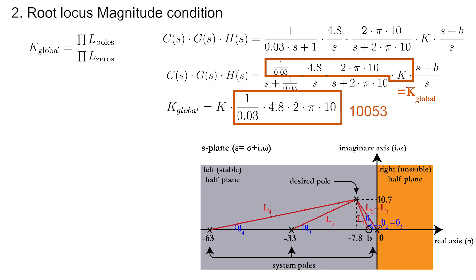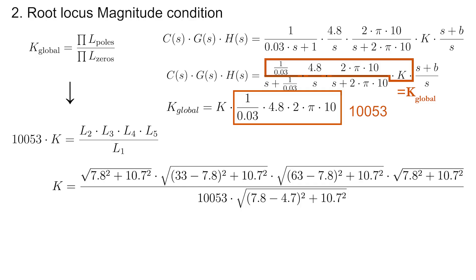Now let's add the lengths on the drawing and use these lengths to rewrite the magnitude condition of the root locus. Using the Pythagoras theorem, all lengths can easily be calculated, which eventually gives a value for K that is equal to 2.4.